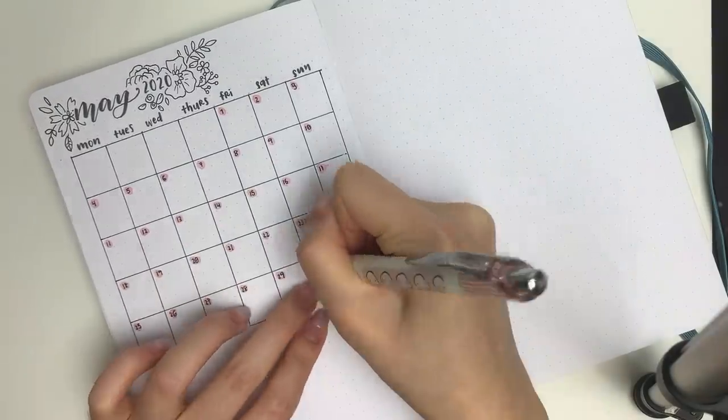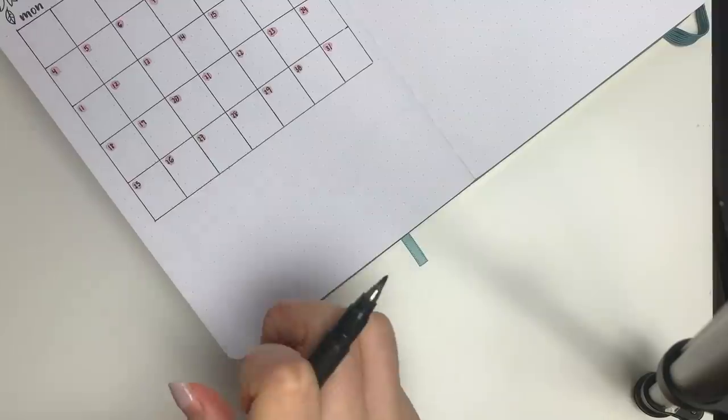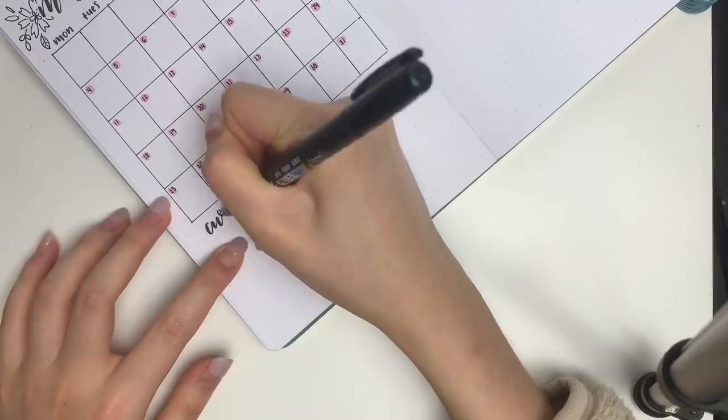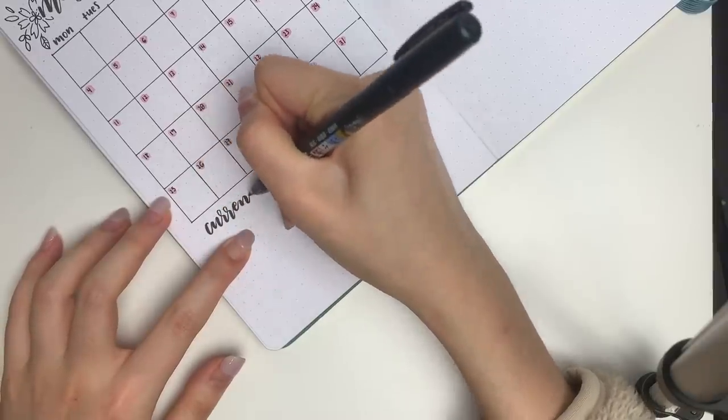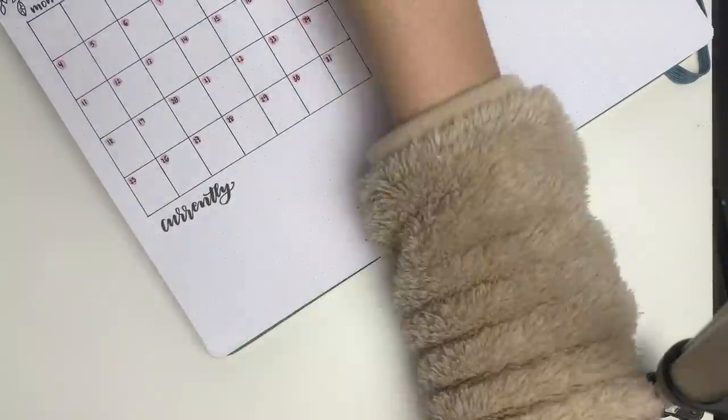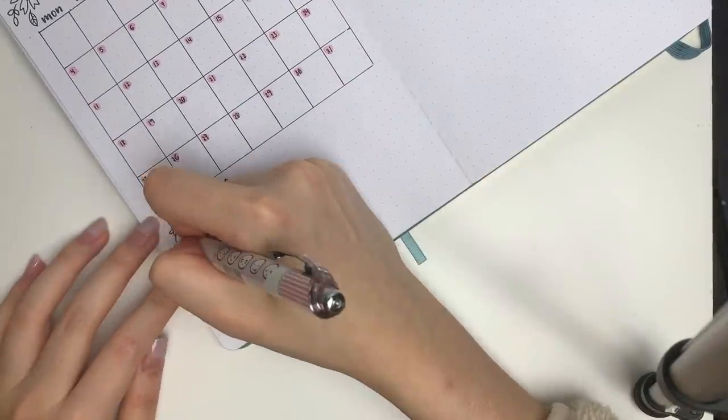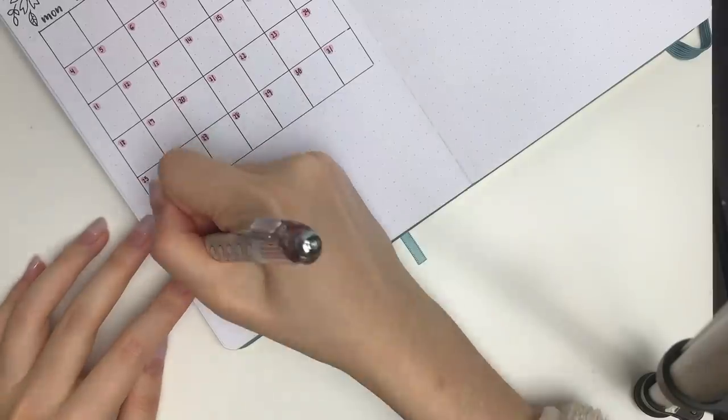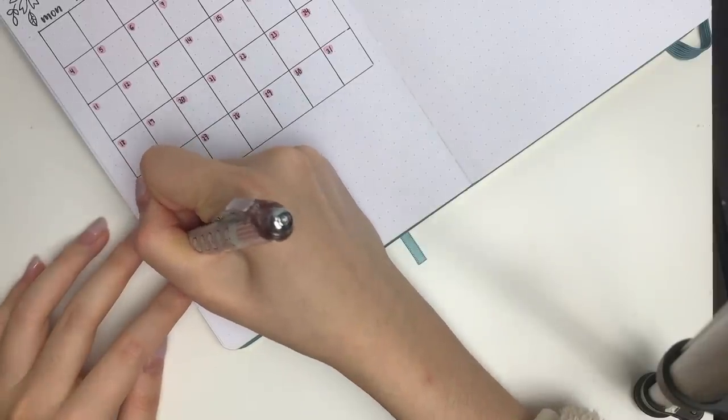After I let it dry for a little bit, I wrote in all of the numbers, and then I'm gonna move on to the bottom section first. I just hand lettered in currently and doodled in some more florals and leaves and stuff. I kind of want to make that a consistent part of my spreads for this month.